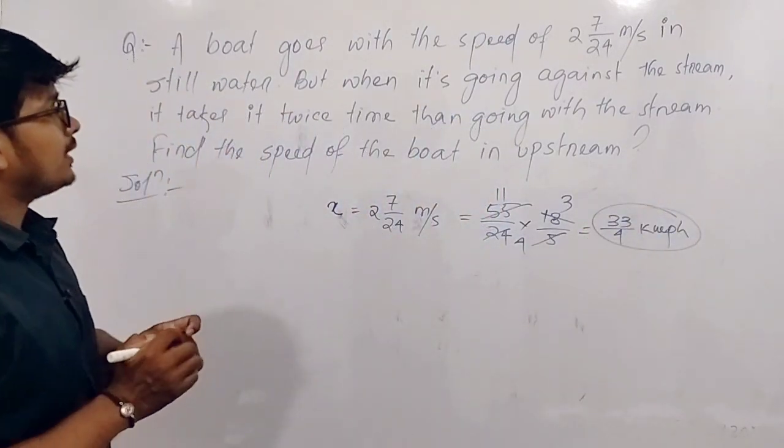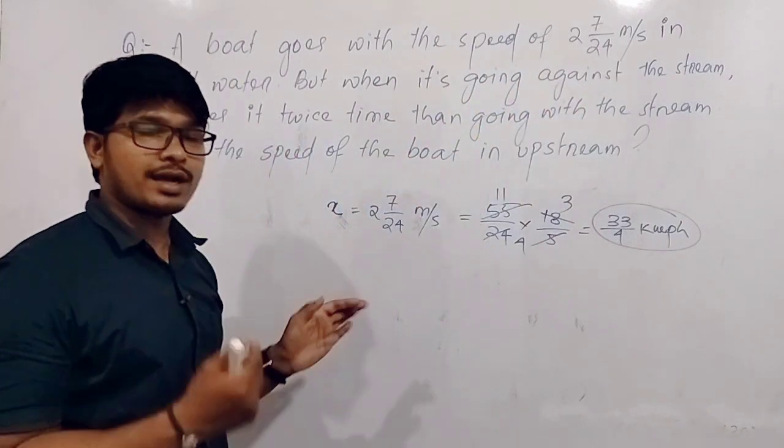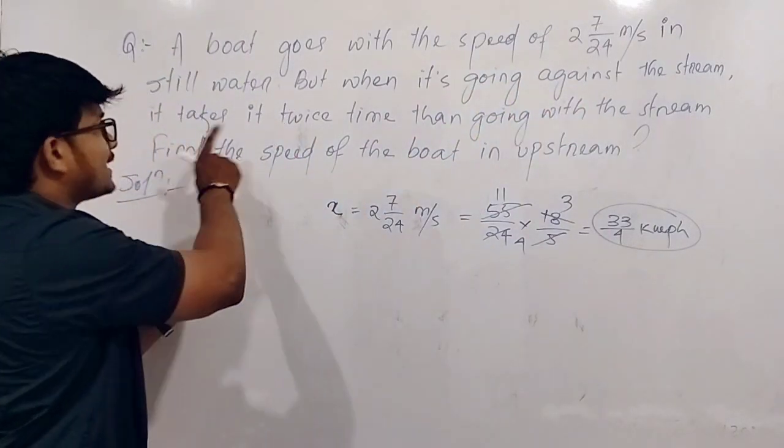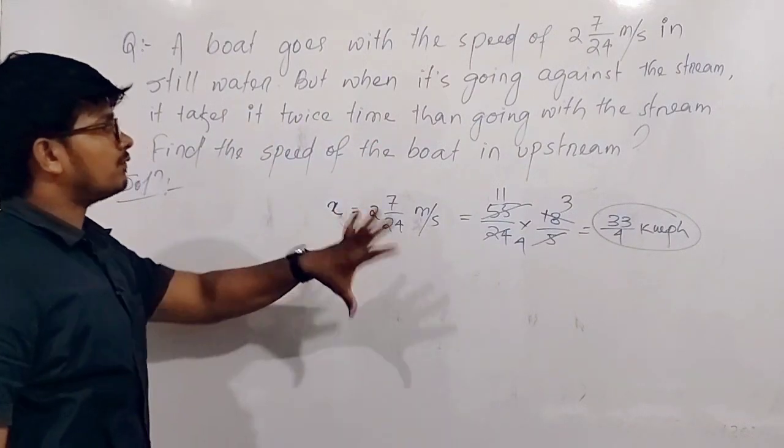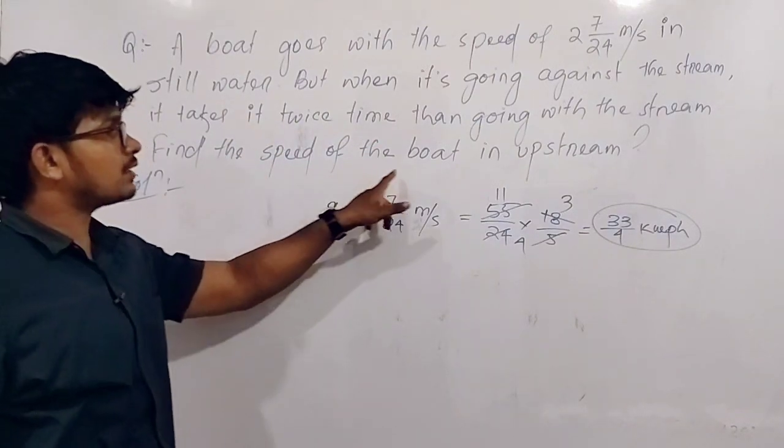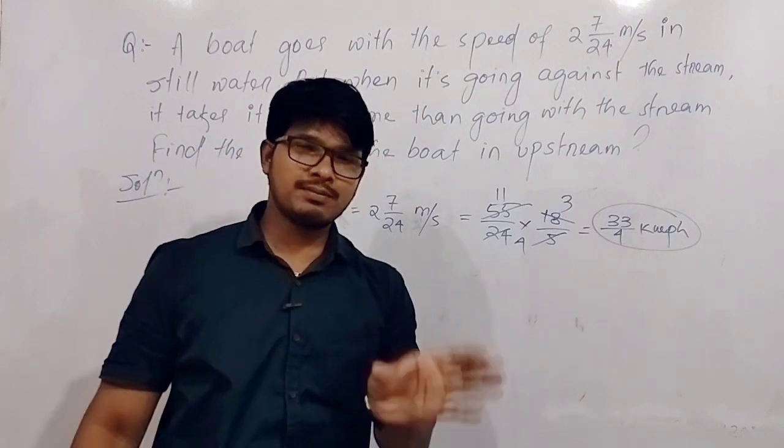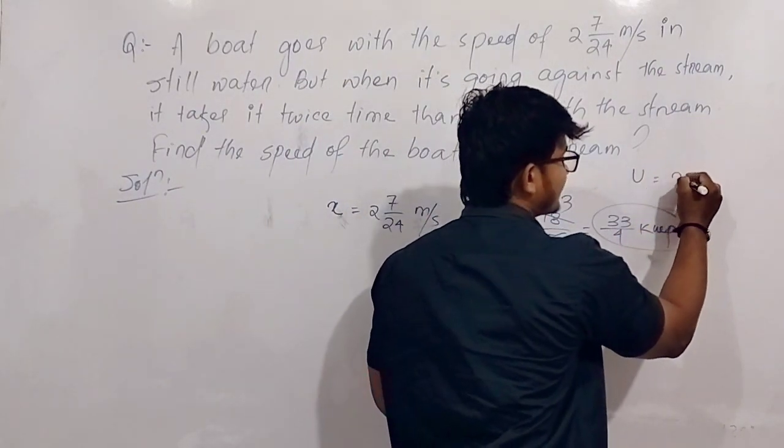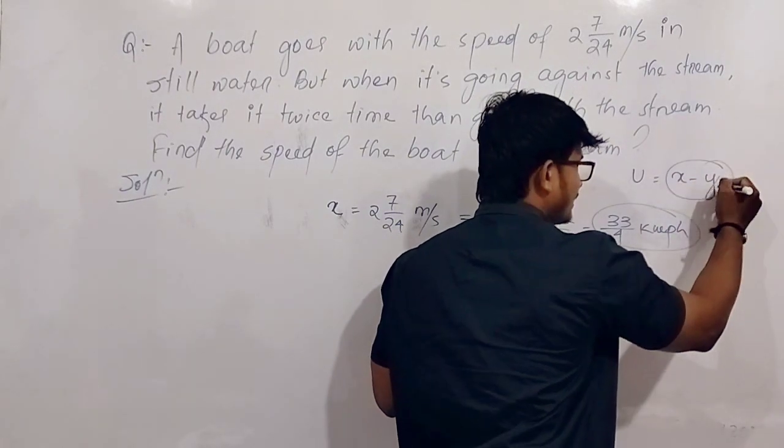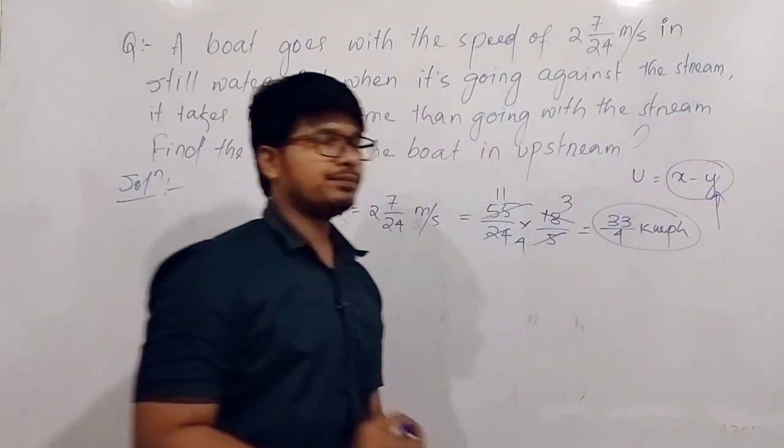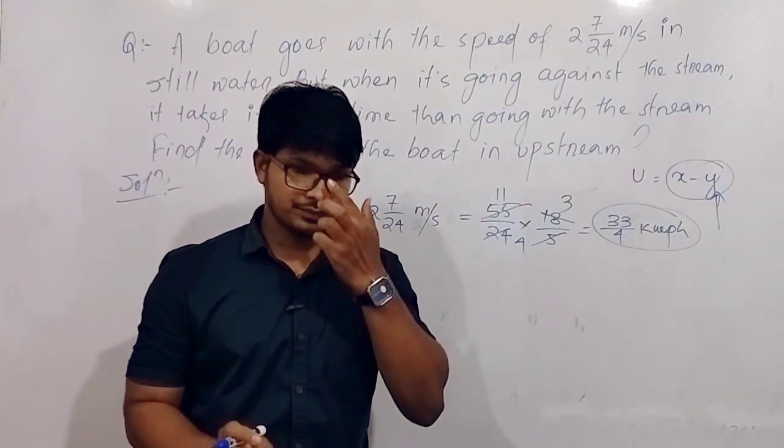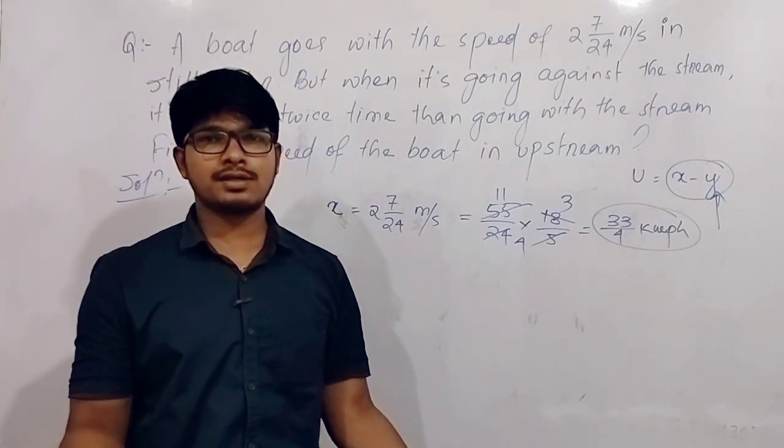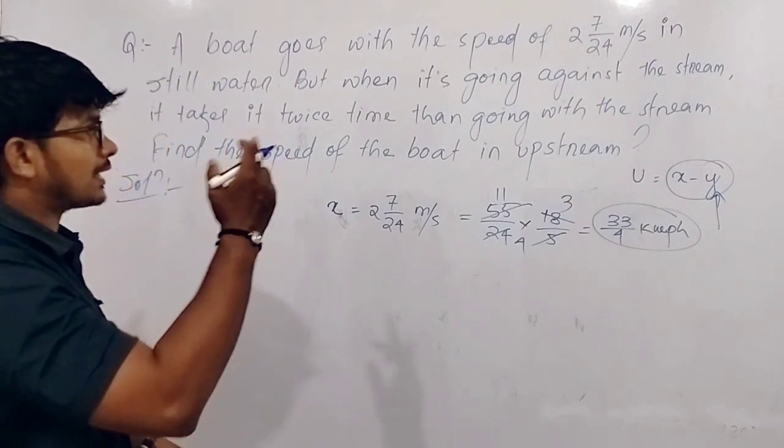Now, when it is going against the stream, going against the stream means upstream, it takes twice the time as going with the stream. So find the speed of the boat in the upstream. Upstream speed of the boat means u, and u means x minus y. Y is the speed of the water or speed of the stream. We need y. X we already know.